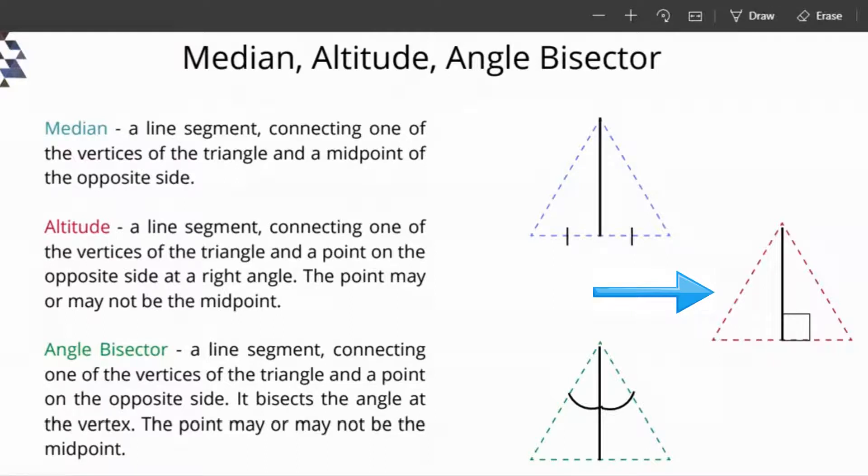Therefore, the two triangles that are formed as a result are right angle triangles. A line segment connecting one of the vertices of the triangle and a point on the opposite side is called an angle bisector, and it bisects the angle at the vertex. The point may or may not be the midpoint. Bisects means divides in half.